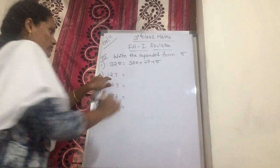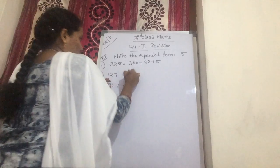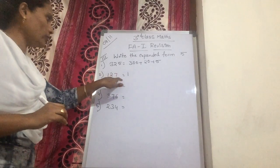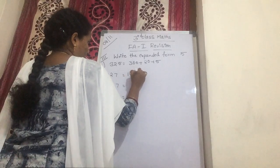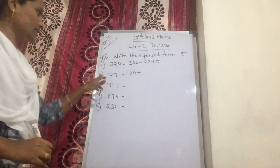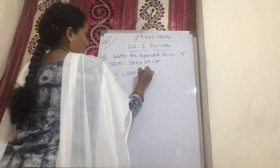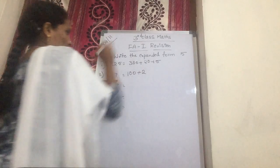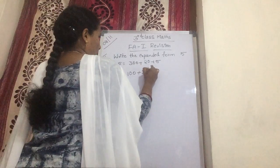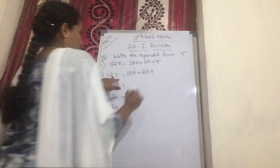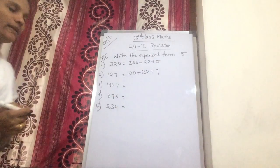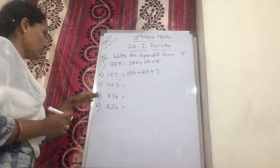Another one: 127. First, you should write 1. After 1, two numbers are there, so you put 2 zeros — that gives 100. Plus, the next number is 2. After 2, one number is there, so you put 10. Plus 7.